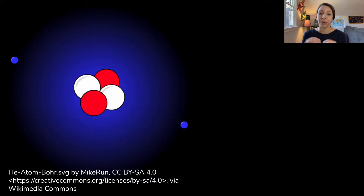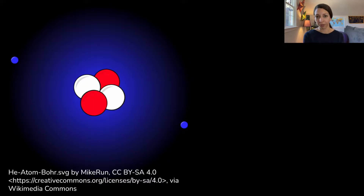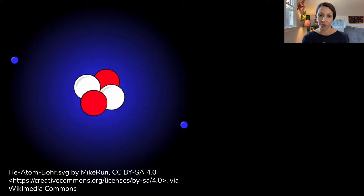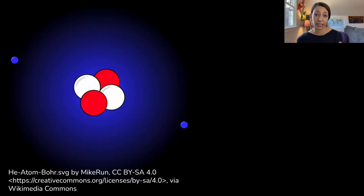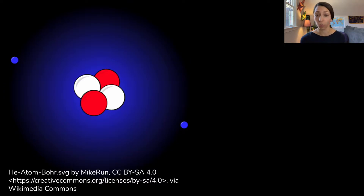Atoms are the fundamental building blocks of matter. In their nucleus, they have protons which are positive, neutrons which are neutral, and then electrons which orbit the nucleus. Protons and neutrons make up the atomic mass. Electrons have virtually no mass, but they contribute to an element's chemical properties and resulting bonds.